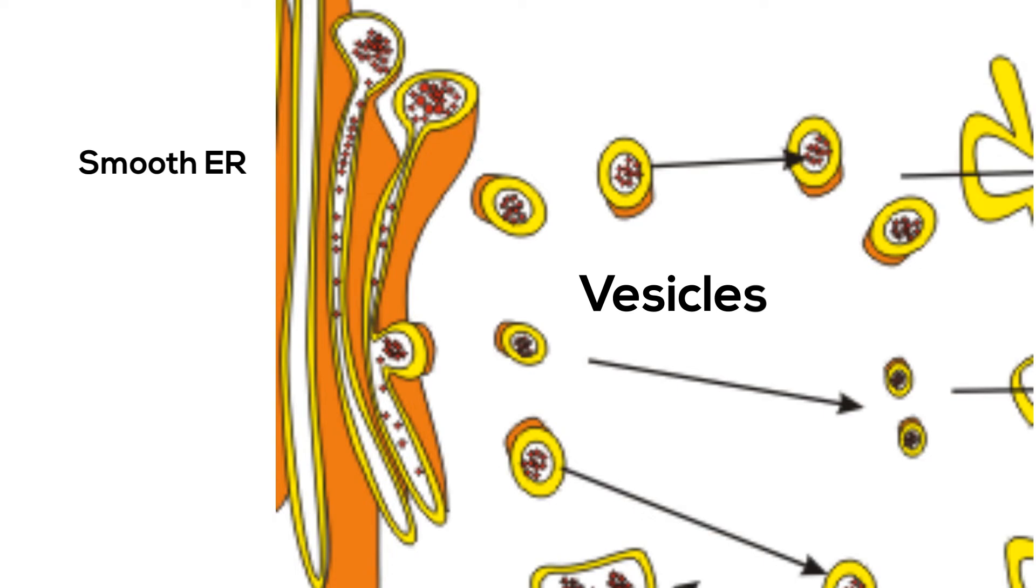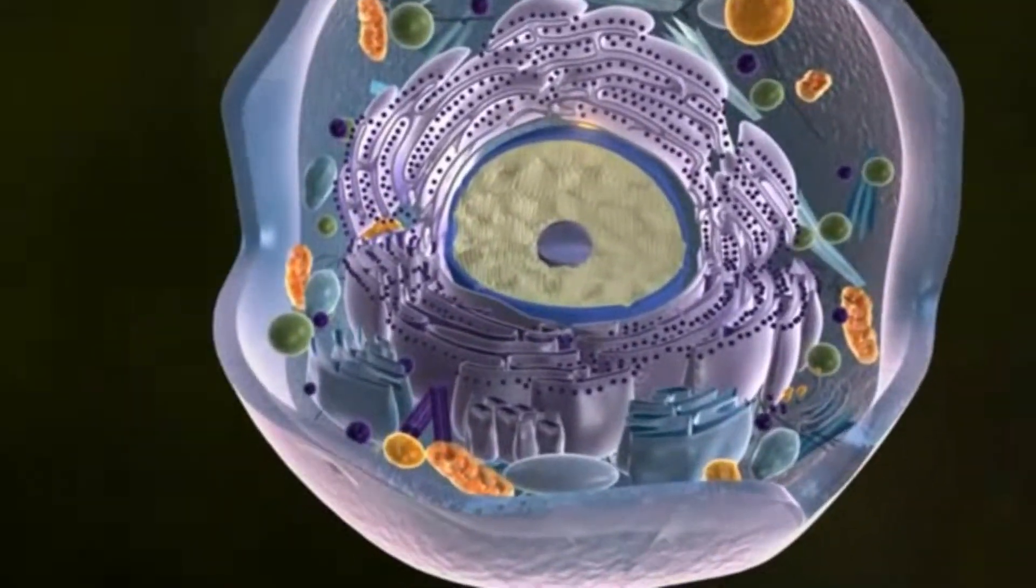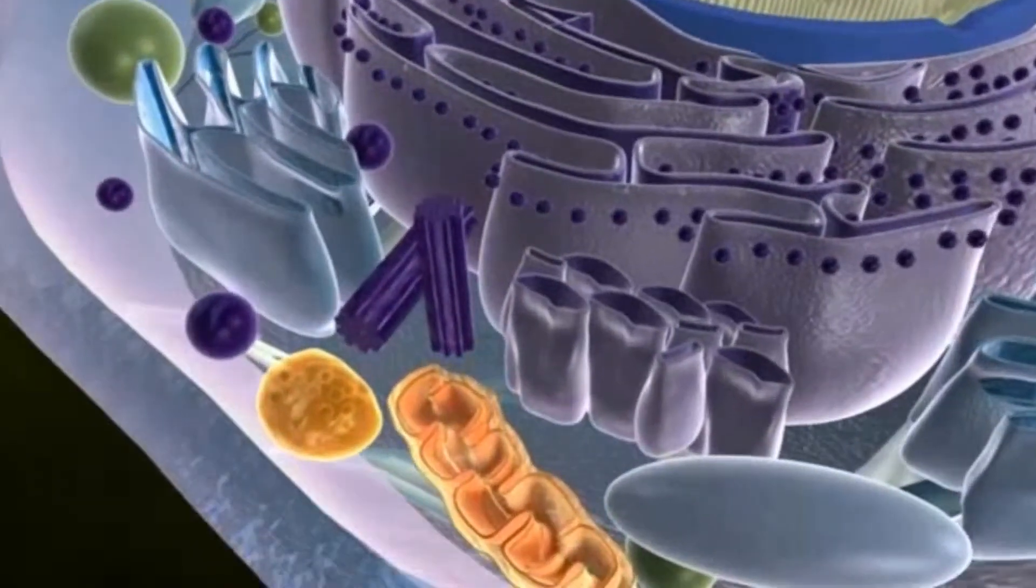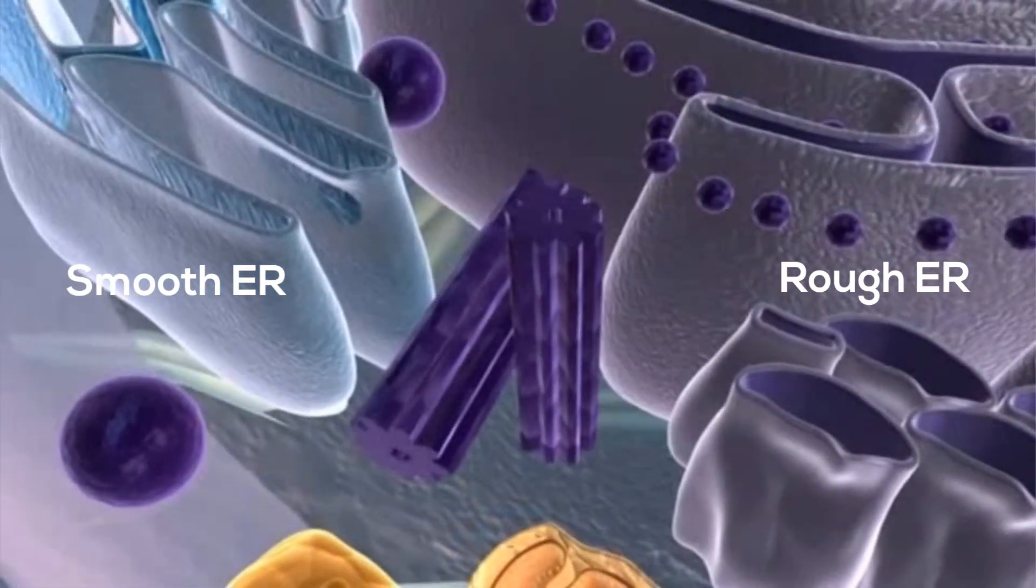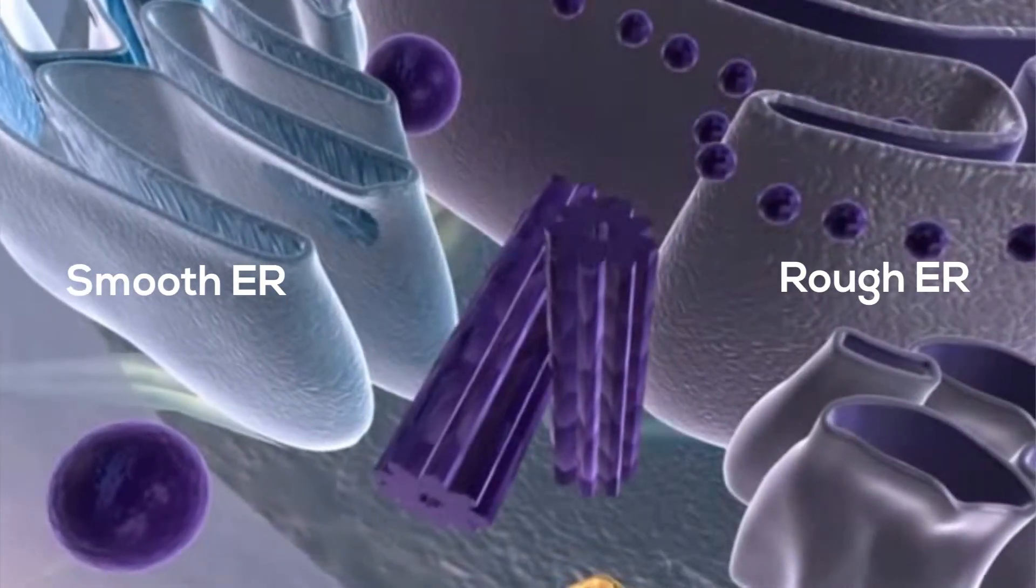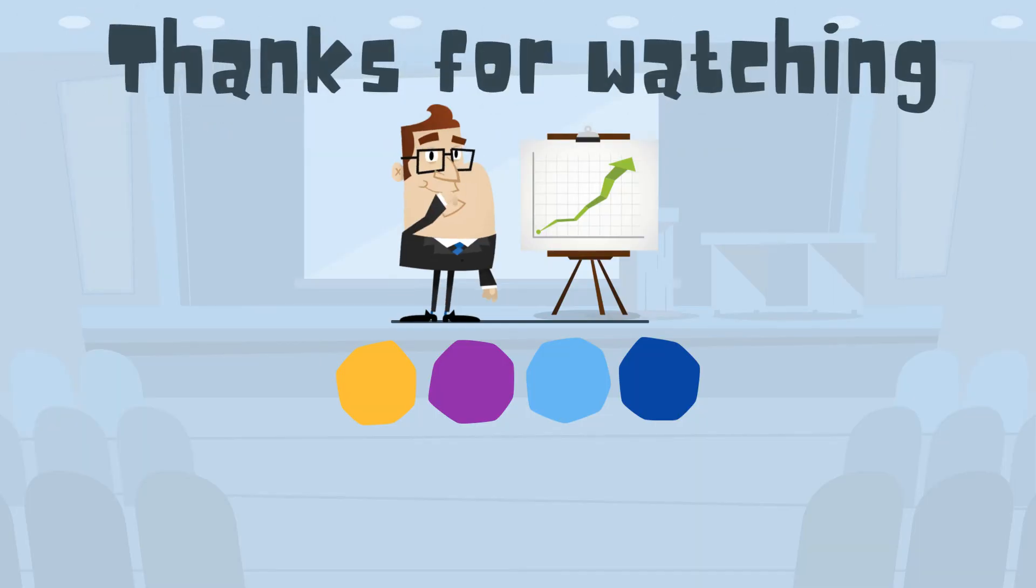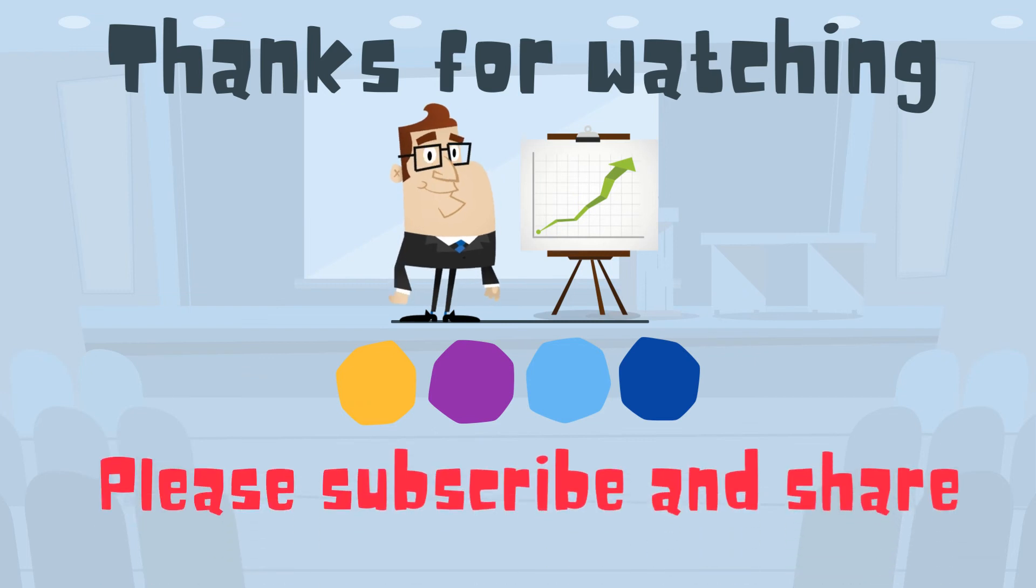In summary, the ER is a transportation system used by the cell to create and transport proteins, enzymes, and lipids throughout the cell. Thank you for watching! MooMooMath uploads a new math and science video every day. Please subscribe and share.